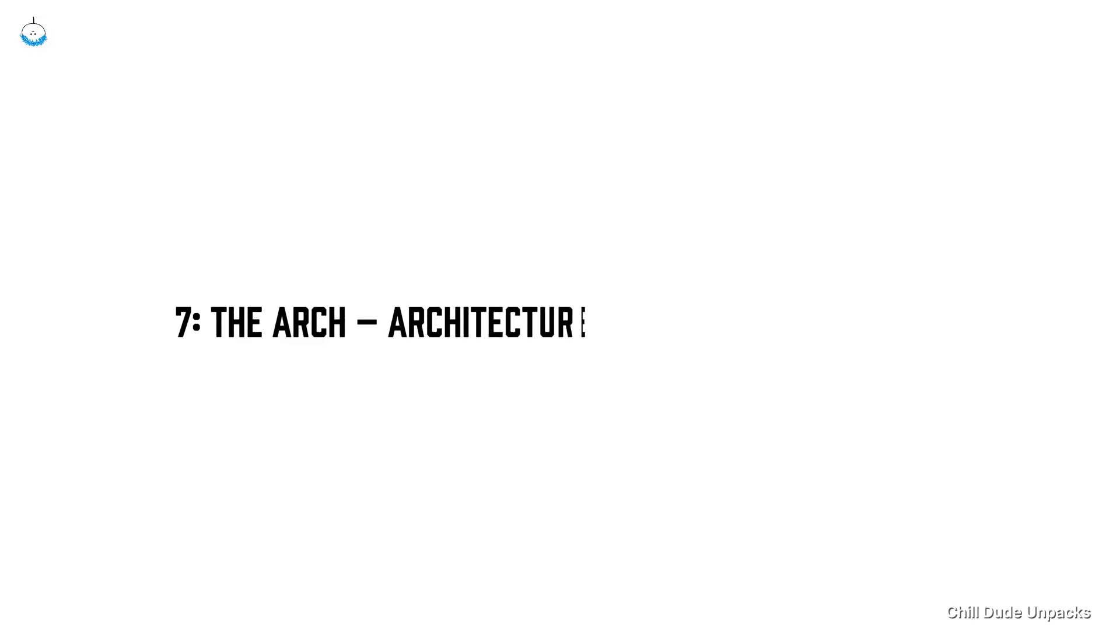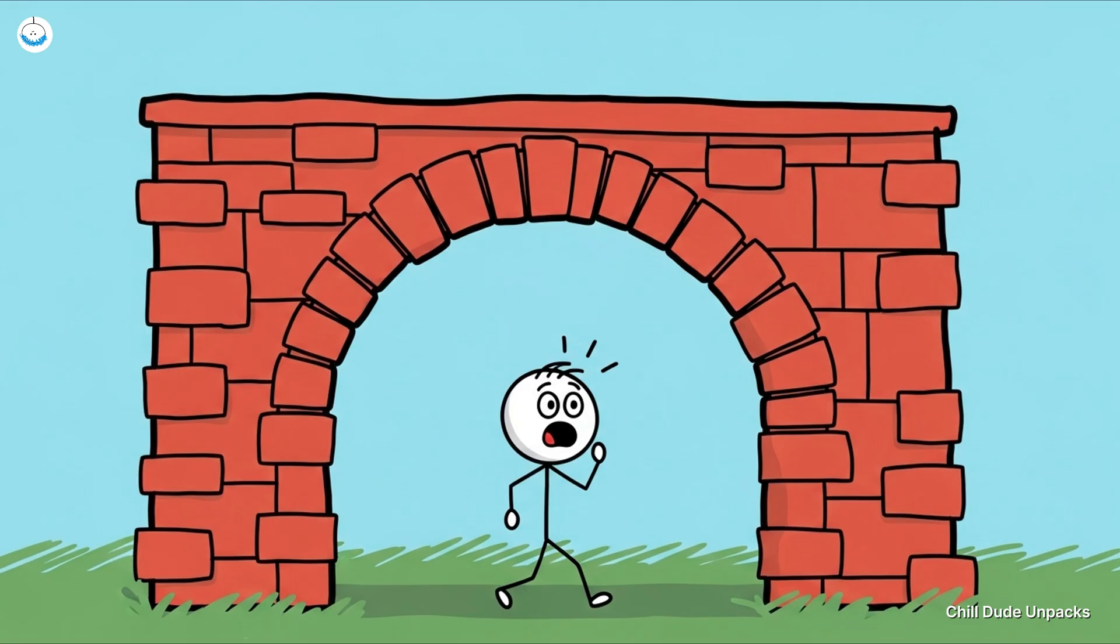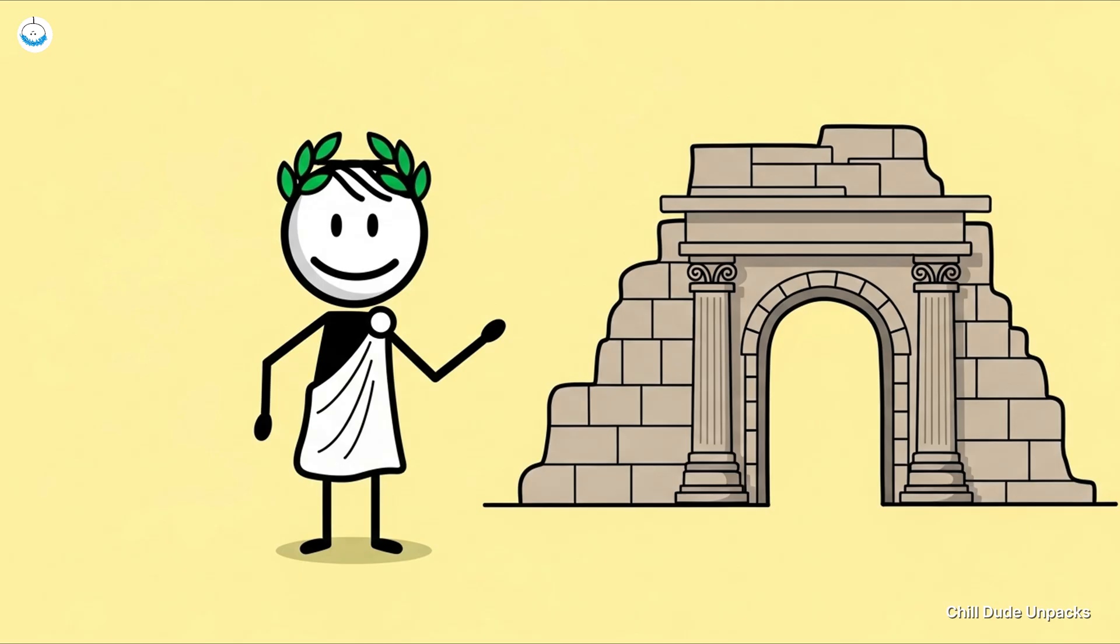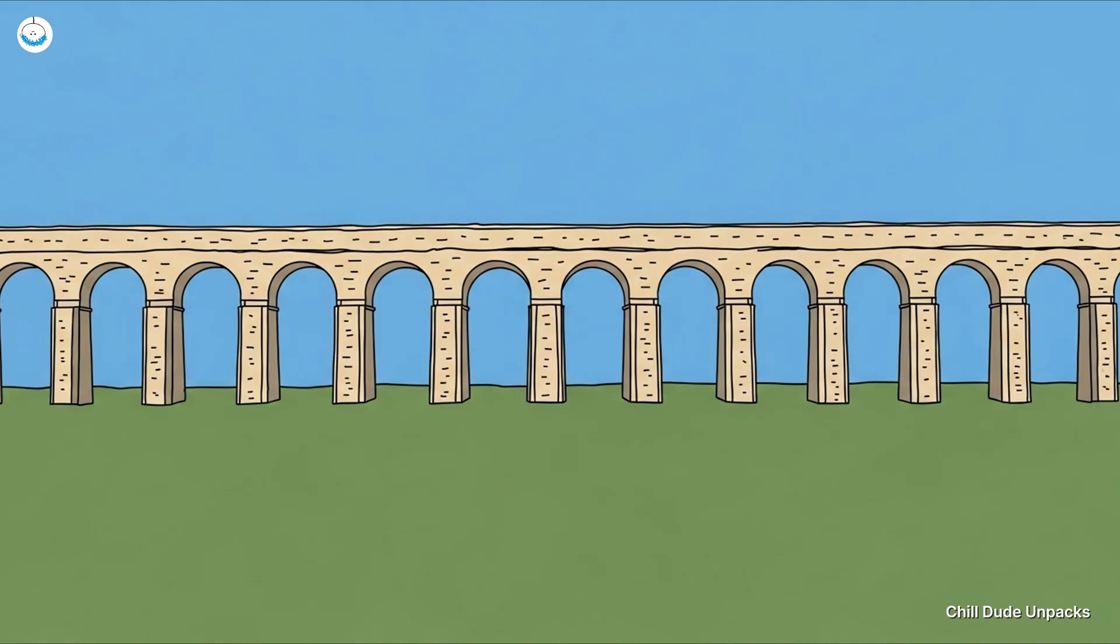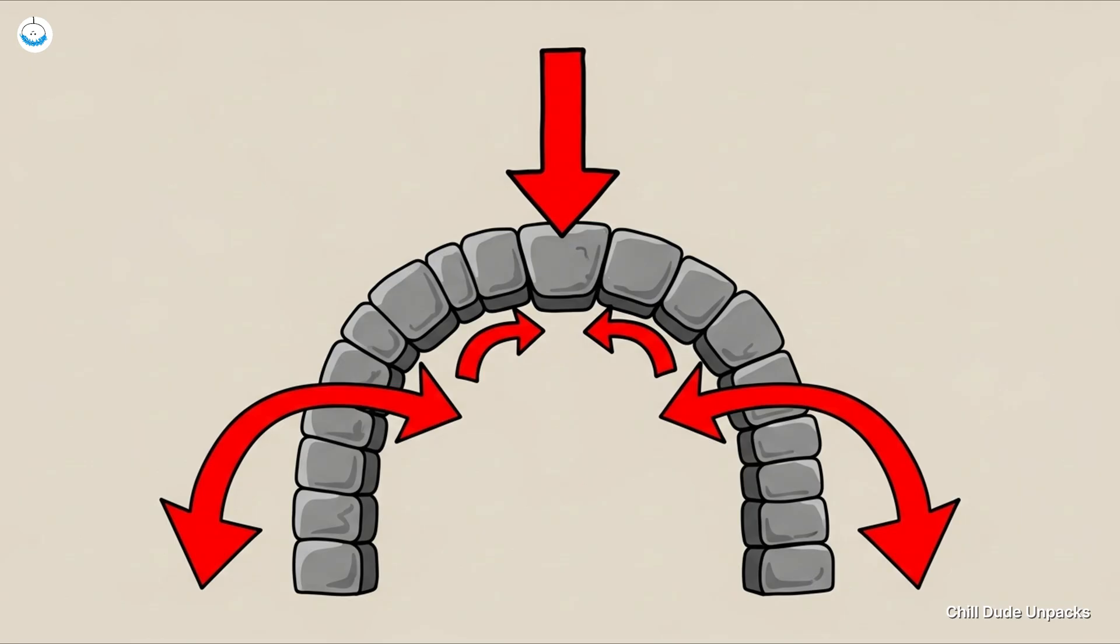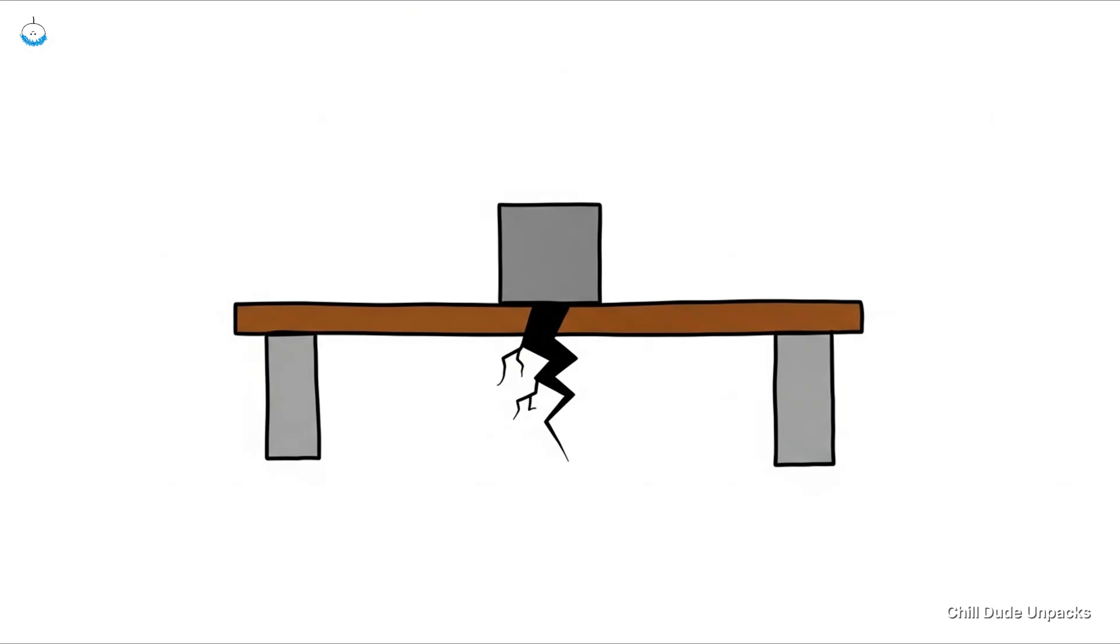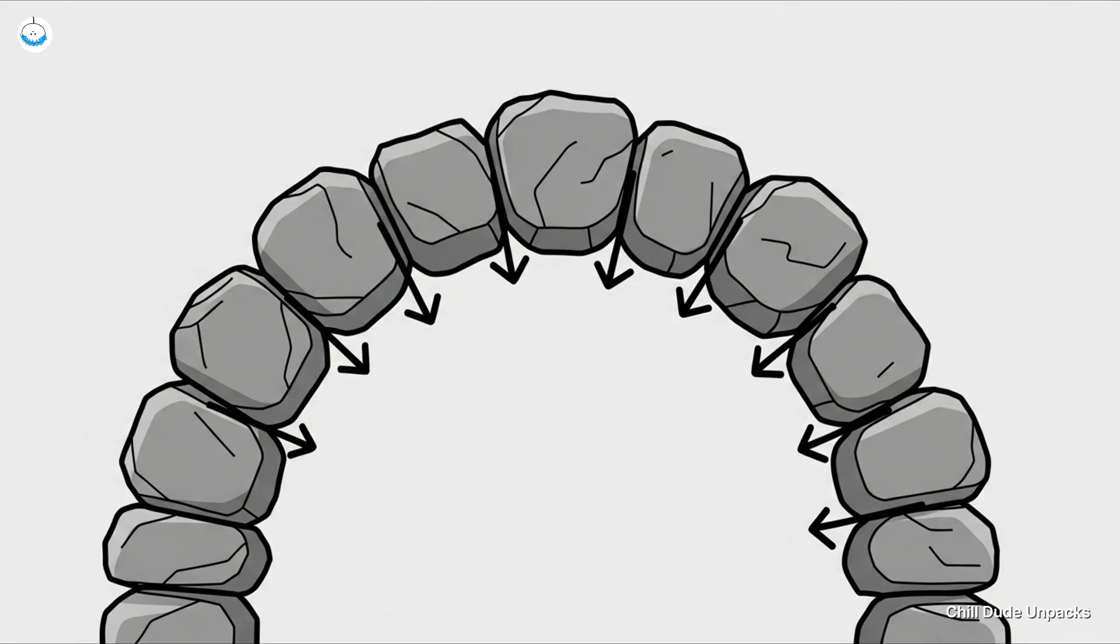Number seven, the arch—architecture's ultimate cheat code. If you've ever walked under a brick arch and thought, 'Wow, that's pretty,' congratulations, you've just experienced one of the oldest structural life hacks. The arch was used by the ancient Babylonians and perfected by the Romans, and it's basically the reason bridges, aqueducts, and cathedrals don't just fall over. The genius is in how the arch distributes weight. Instead of a beam trying not to snap in the middle, each stone pushes against the next, transferring the load outward and down.